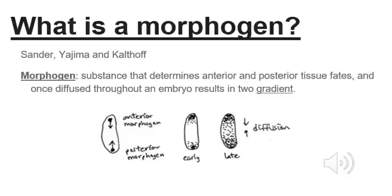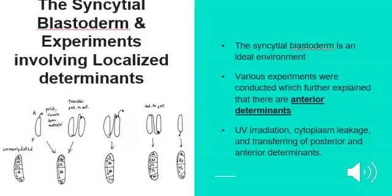These morphogens diffuse through the syncytial blastoderm, forming two gradients. The syncytial blastoderm is an ideal environment for these gradients, containing both protein and RNA, which are able to diffuse from a point source.